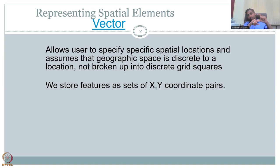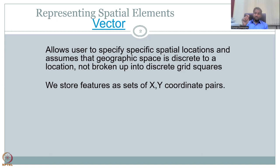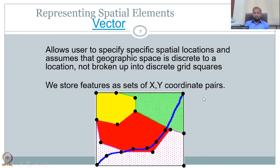Inside the grid space, the XY coordinate is assumed the same because we are taking an average value of the grid. In a vector notation, each object will have a unique discrete XY location. Here you have an image with multiple types of features and objects.